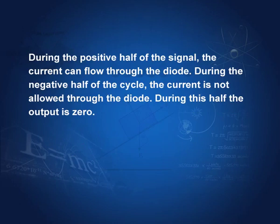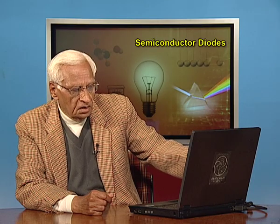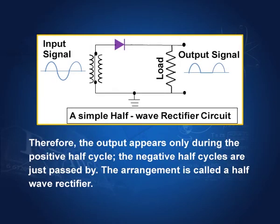The signal supplies an alternating voltage. During the positive half of the signal, the current can flow through the diode. During the negative half of the cycle, the current is not allowed and the output is zero. Remember the symbol of a P-N diode — it allows current through only during the positive half, and during the negative half it is cut off. So the output is: positive half cycle, then zero, then again positive half cycle.